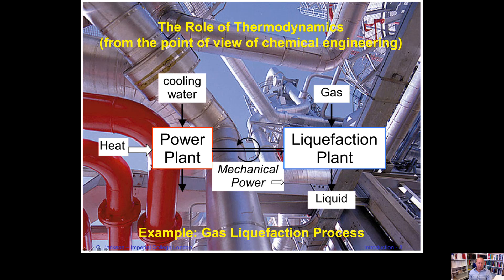So what role does thermodynamics play in chemical engineering? Here is an example of a gas-liquid factoring process in a plant. On the left-hand side, you use heat derived from burning gas in a power plant, heating steam and passing it through a turbine to produce mechanical power. To cool the steam and produce a cyclical process, you need cooling water. The key questions are: how much heat must you produce from burning fossil fuel to generate the required mechanical power, and how much cooling water do you need to cool and recycle the steam?